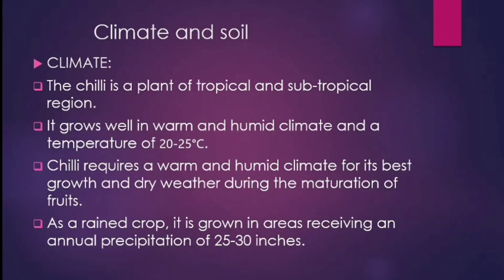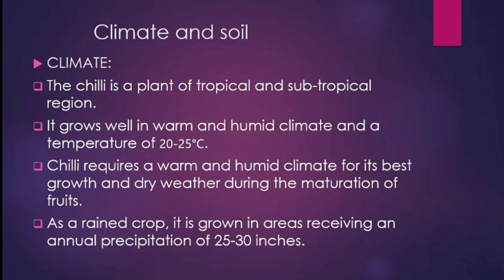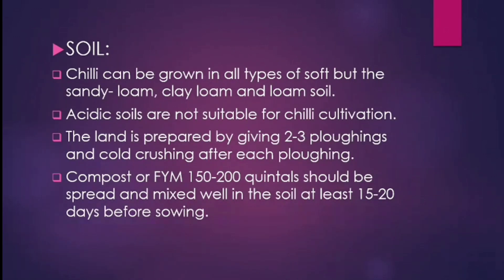Climate and Soil. The Chilli is a plant of tropical and subtropical regions. It grows well in warm and humid climate at a temperature of 20 to 25 degrees Celsius. Chilli requires warm and humid climate for its best growth and dry weather during the maturation of fruits. As a rain crop, it is grown in areas receiving annual precipitation of 20 to 30 inches. Chilli can be grown in all types of soil, but sandy loam, clay loam and loam soils are preferred.